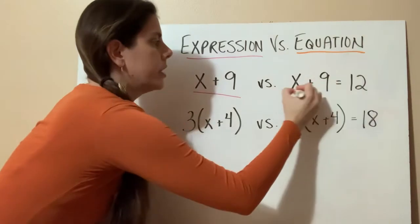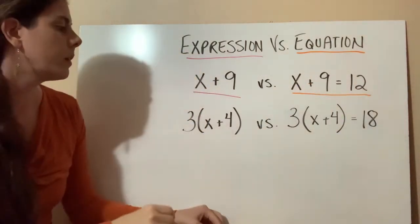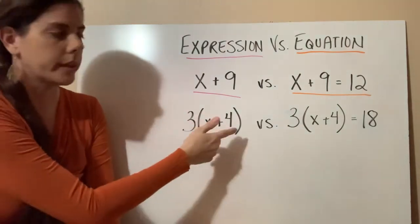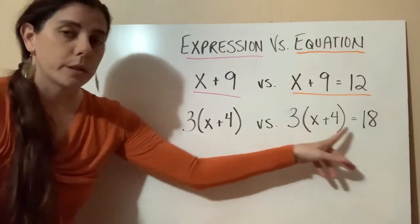So this is our equation. Let's look at our next example. We have 3x plus 4, 3 times x plus 4, versus 3 times x plus 4 equals 18.